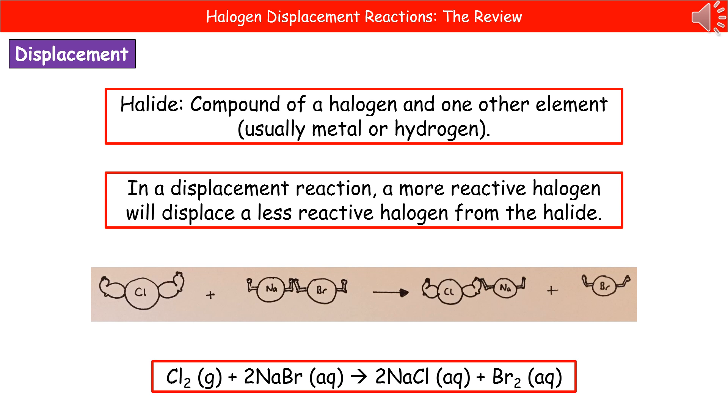Now, you can think of this in terms of my amazing little drawing skills there. We start off with chlorine, which, as we know, is up near the top of group seven. So it's quite reactive. And we've got a halide there of sodium bromide, bromine further down. So not as reactive as chlorine. So when they react together, chlorine is more reactive than bromine.